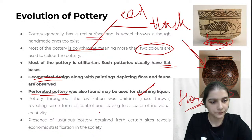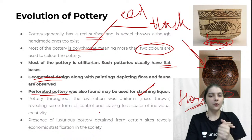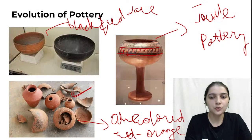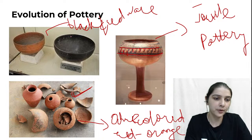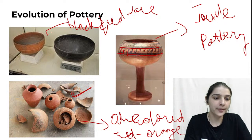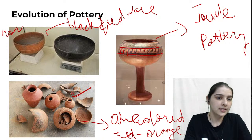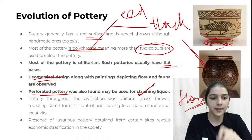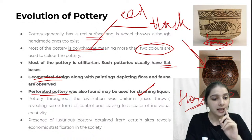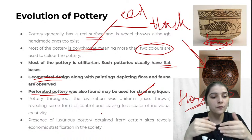Clarification: black and red ware pottery is monochrome — single colors are used separately. Monochrome means a single color. When we talk about polychrome — that figure uses bichrome or polychrome — two or more colors are used. Pottery evolved over time as civilizations formed.